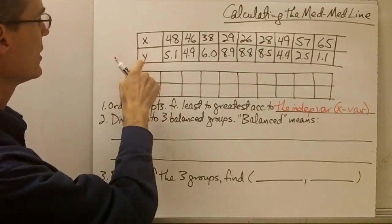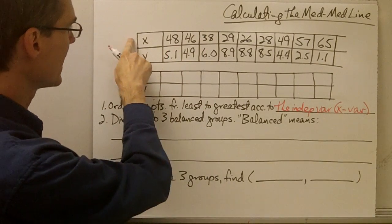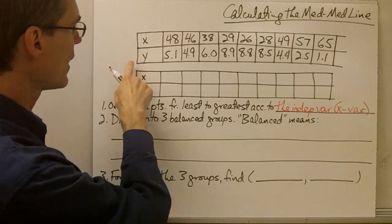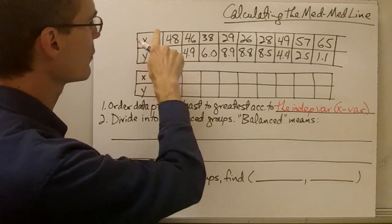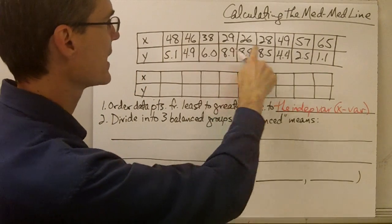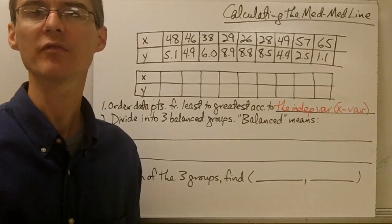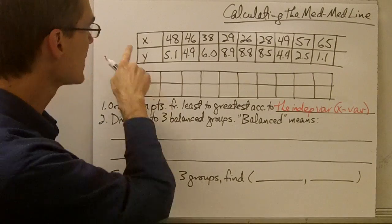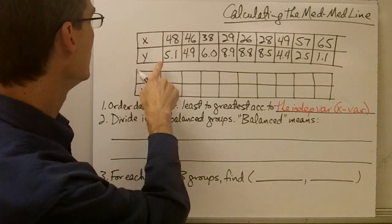That is the x variable. So here I've got my data set, my x values and my y values. I want to put them in order. I've got nine points here, and I want to put these nine points in order from least to greatest according to the x value.